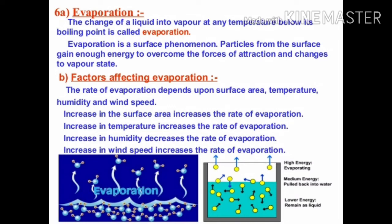There are a few factors which affect evaporation. The first factor is surface area. The second is temperature, then humidity, and wind speed. When we talk about surface area — when you increase the surface area, evaporation gets faster. The best example is drying clothes: spreading clothes out increases surface area and speeds up evaporation. Evaporation is a surface area related phenomenon. If you increase the surface area, the speed of evaporation will increase. Second is temperature: in summer, clothes dry faster compared to winter and rainy seasons. Increasing temperature increases evaporation.